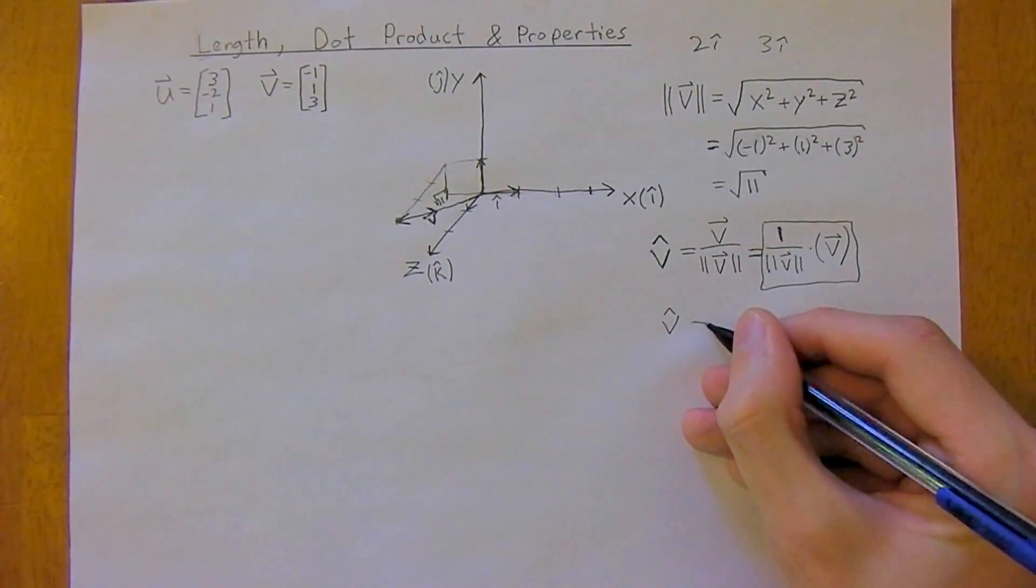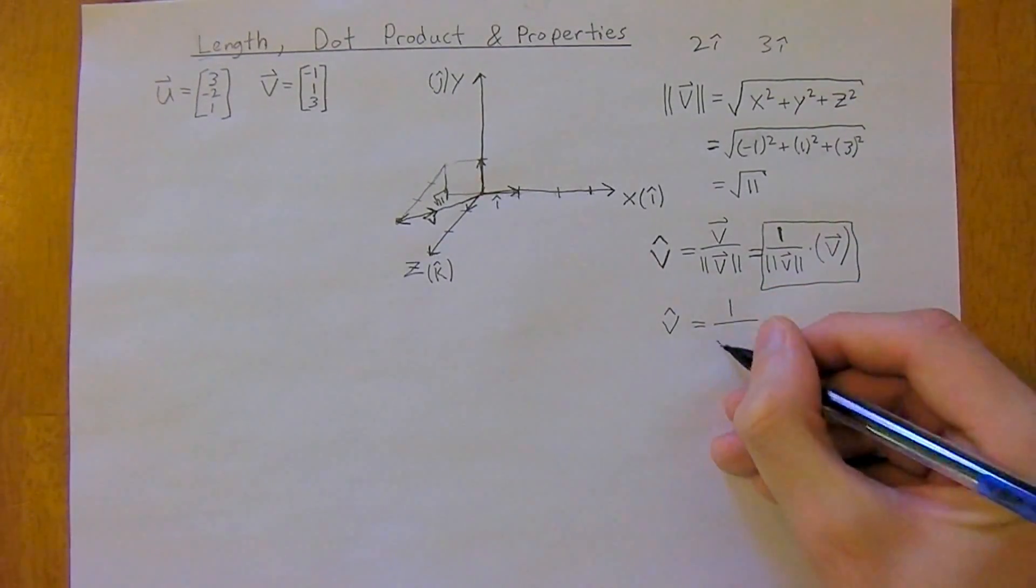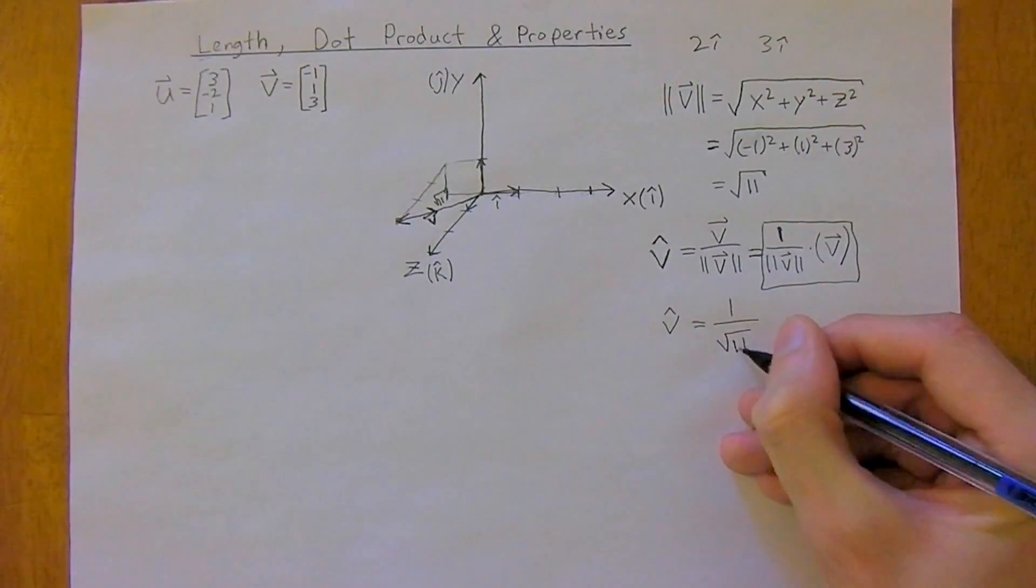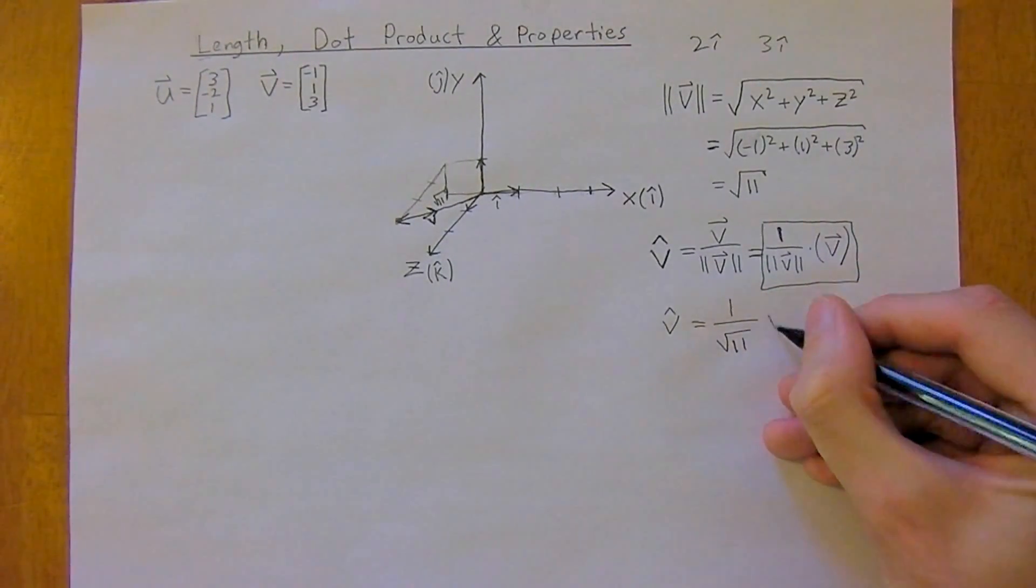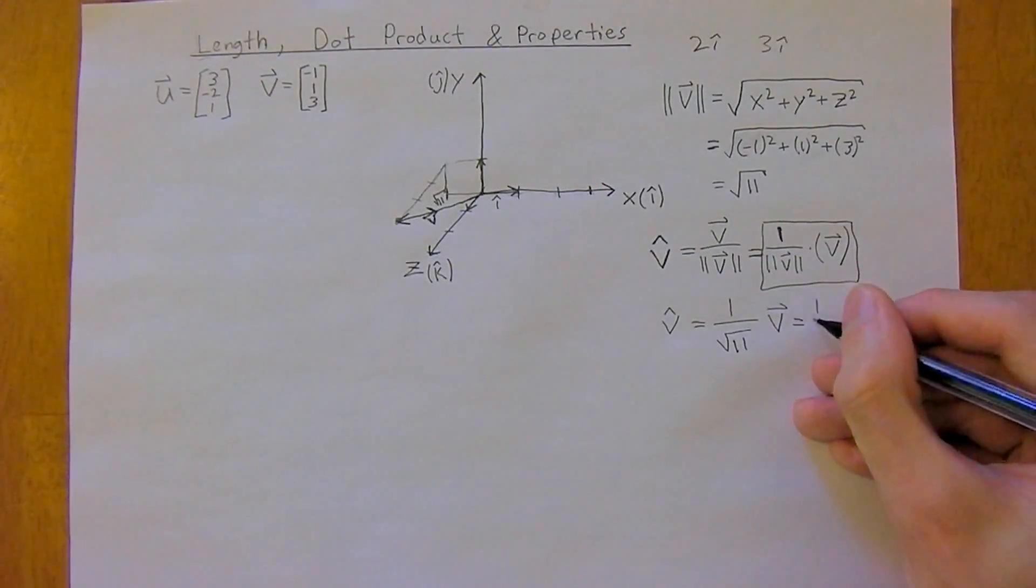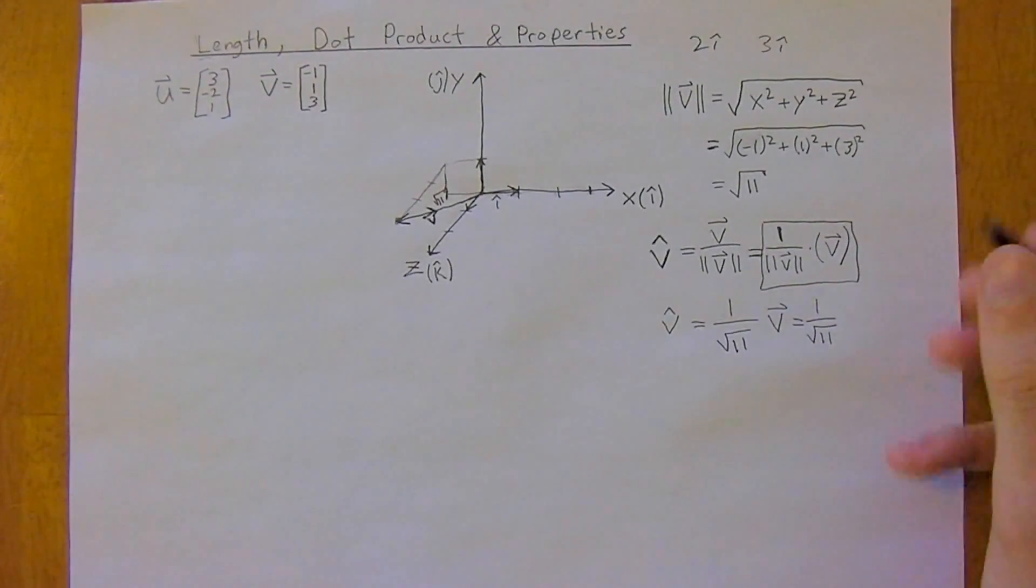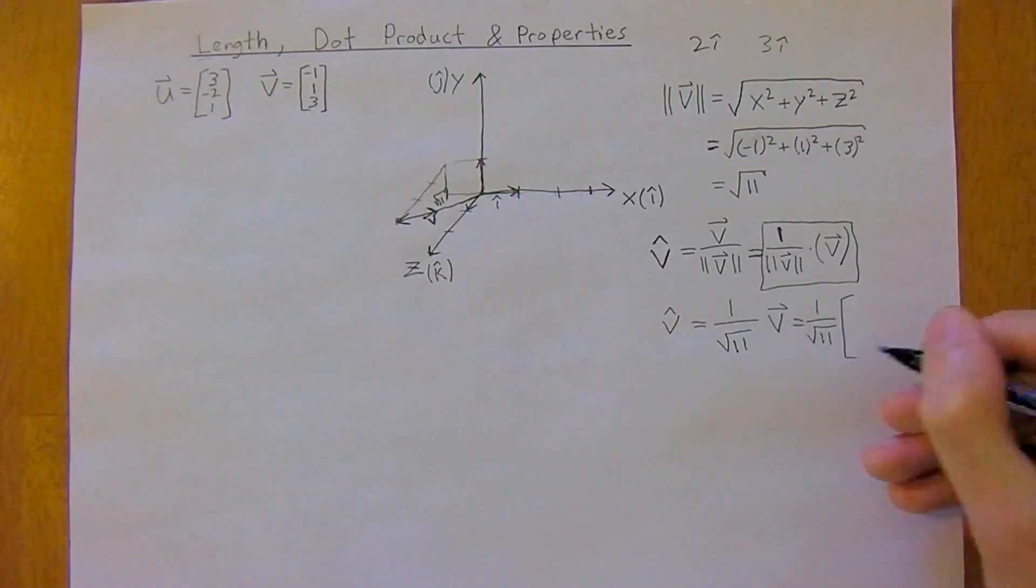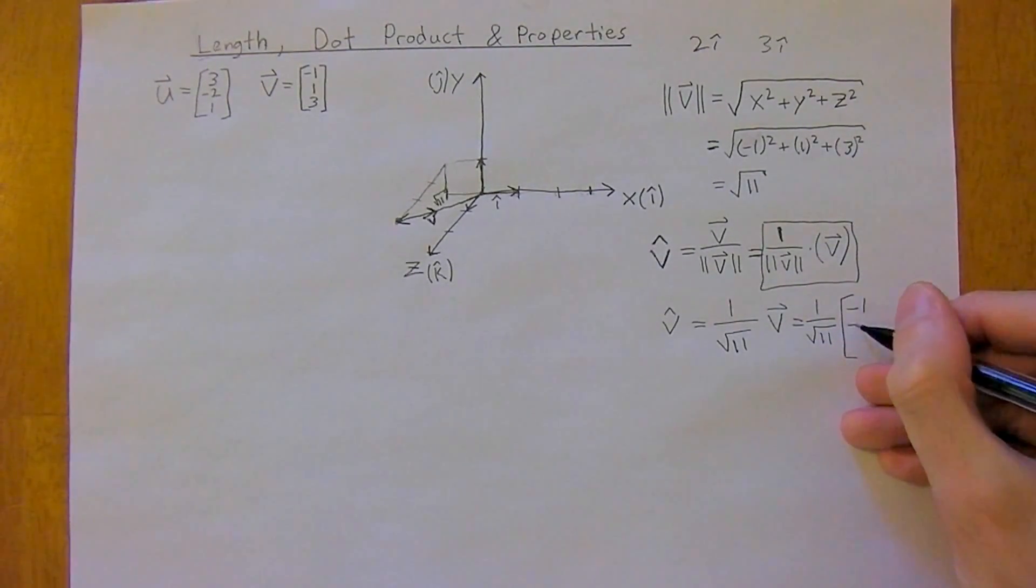So v-hat is going to be equal to 1 over the square root of 11 times vector v. And this is going to be, well, we just put in the components now, we'll work in column form still. So negative 1, the y-component is 1, and the z-component is 3.